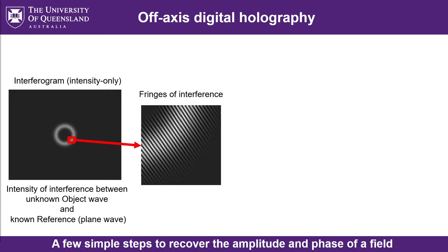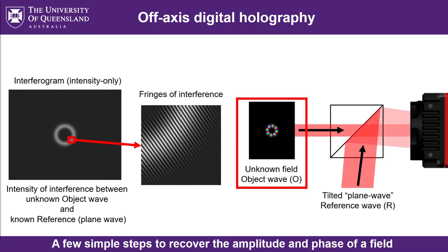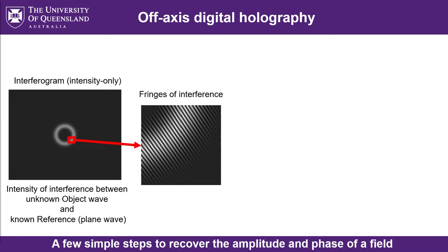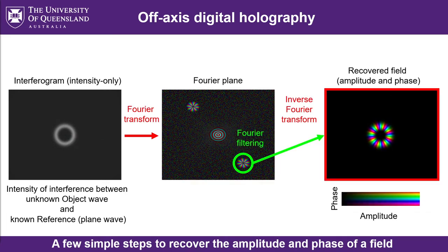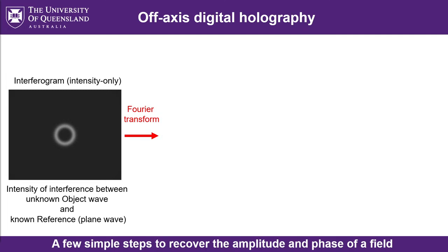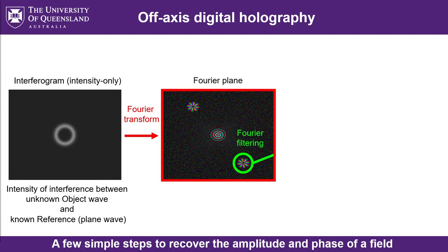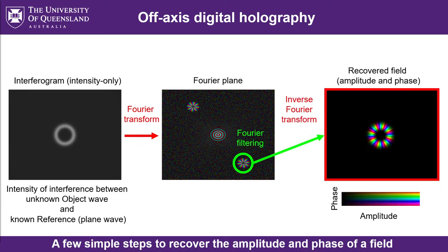We start off with a camera image that captures the intensity of the interference between a reference plane wave and the unknown field — we'll call the unknown field the object wave, and that's the wave you want to reconstruct numerically. That interferogram is captured and then you do some Fourier processing on it, and you'll end up with a reconstructed field where every pixel has an amplitude and a phase. It's basically just a Fourier transform, apply a filter in Fourier space, inverse Fourier transform, and then remove the tilt of the reference wave.